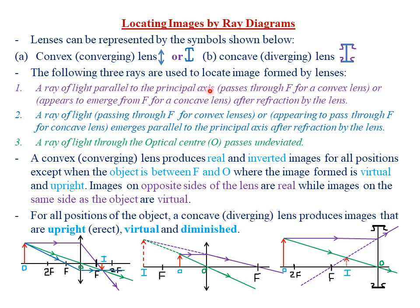The first ray states that a ray of light parallel to the principal axis passes through f for the case of a convex lens after refraction by the lens — where f represents the principal focus. Consider this ray which is close and parallel to the principal axis. After refraction on the lens, it passes through f, the principal focus. So that is the first ray for a convex lens.